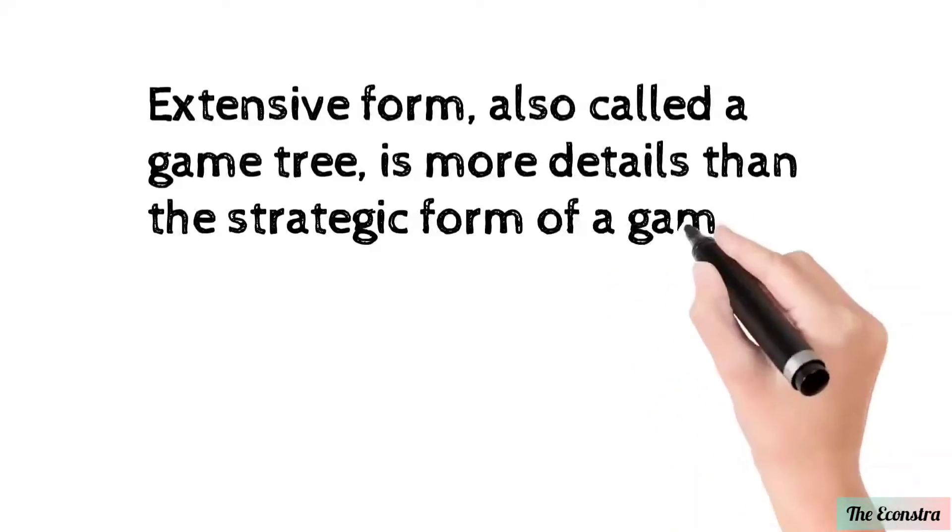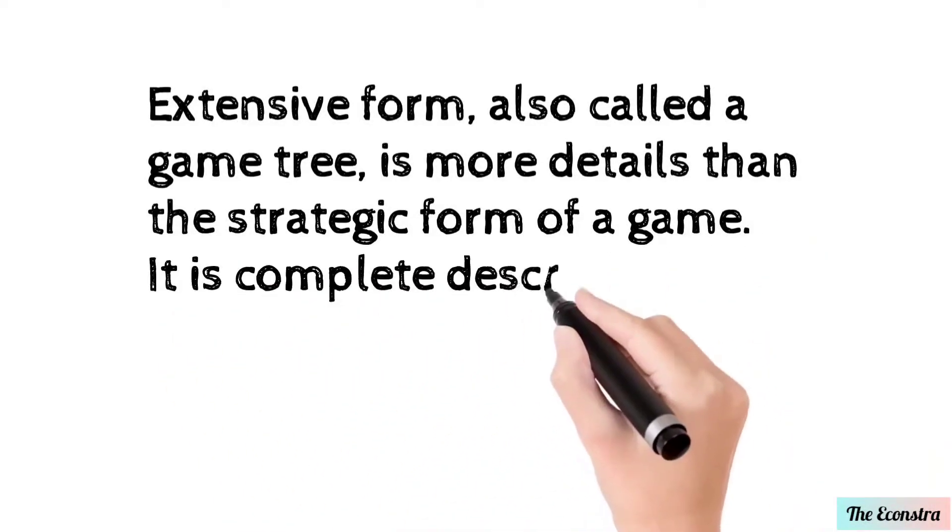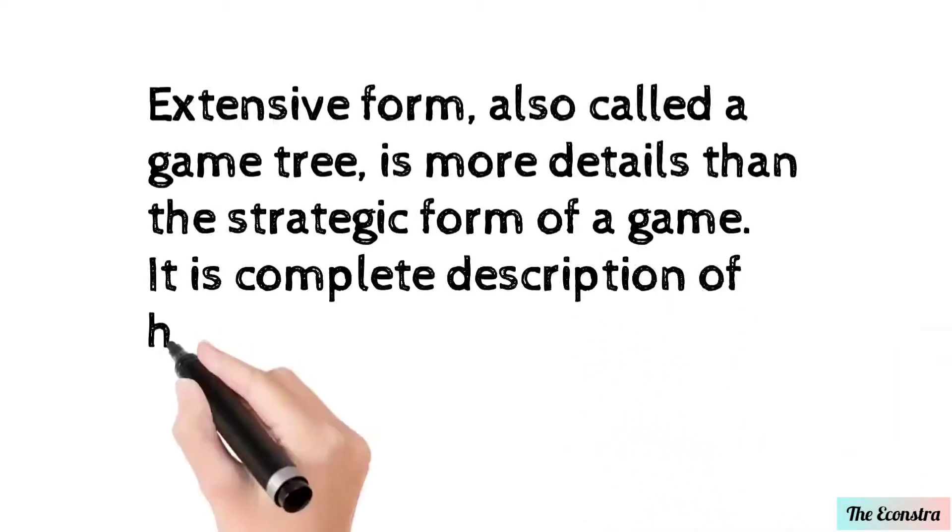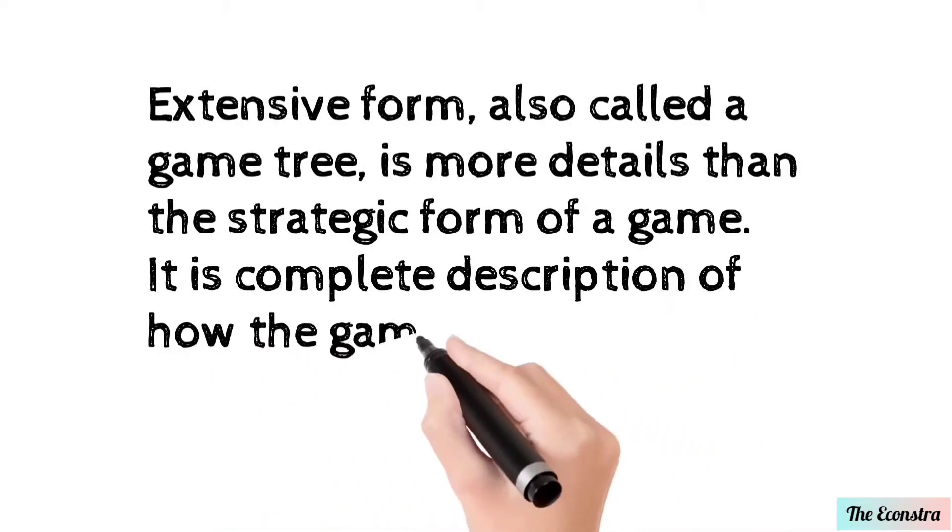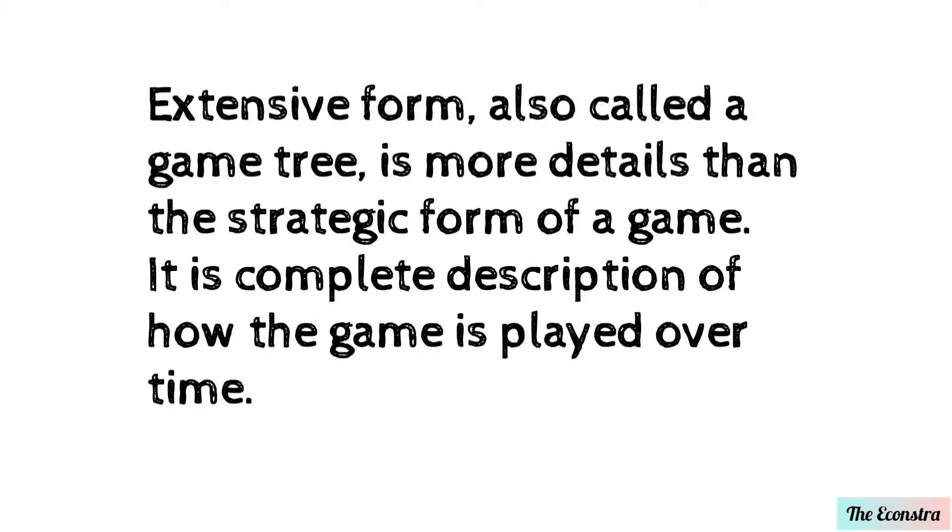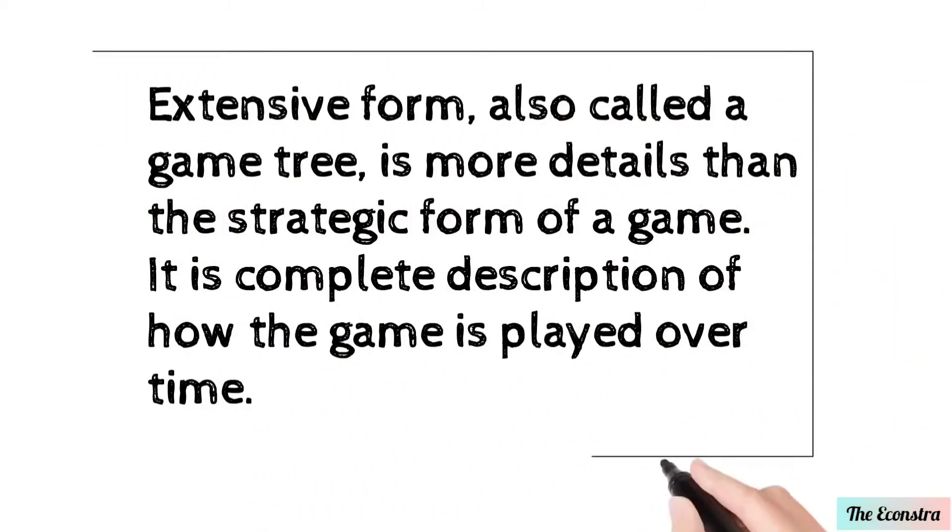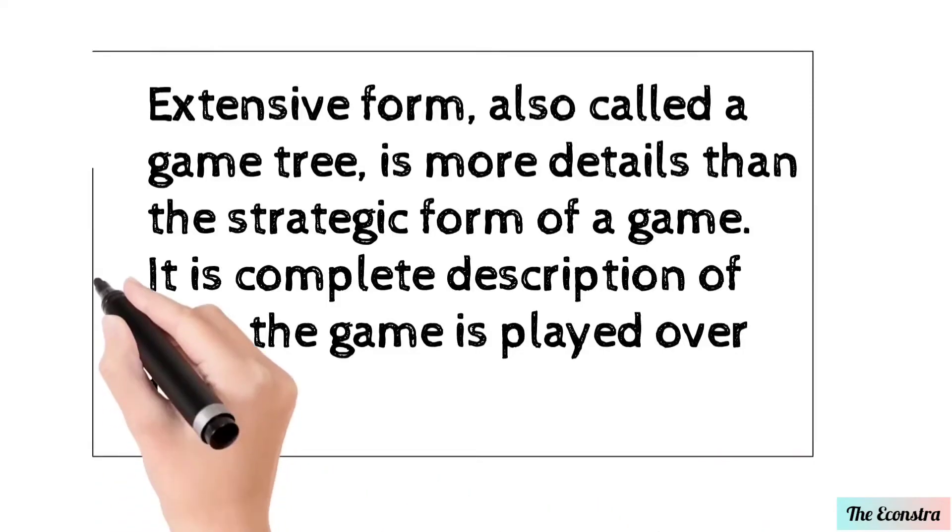This type of form creates a tree of the game. It's called extensive form. In this type of tree, the strategy of a game is more detailed, and it completely describes how the game is played over time.